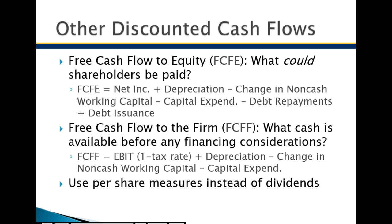We use per share measures — take the cash flow and divide by the outstanding shares to get cash flow per share. Then we can use those cash flows per share in the discounting model, substituting cash flow for dividends in those formulas. Instead of looking at dividends in the models, you put in the cash flow per share.